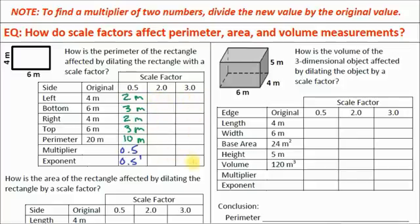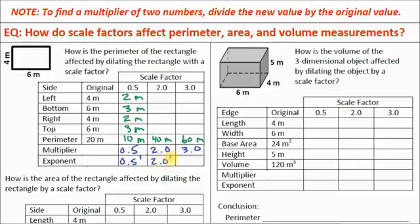The next two columns I'd like you to do on your own. When you apply a scale factor of 2, the perimeter becomes 40 meters; with a scale factor of 3, it becomes 60 meters. The multiplier for scale factor 2 is 40 divided by 20, which is 2.0. For scale factor 3 it's 60 divided by 20, which is 3.0 — that's just your scale factor. In exponential form, these are 2.0 to the first power and 3.0 to the first power. Perimeter is affected directly by the scale factor — scale factor to the first power.